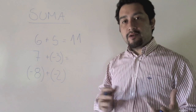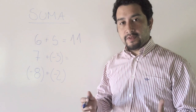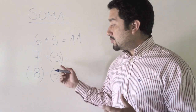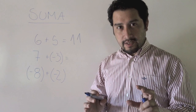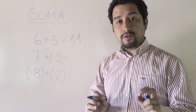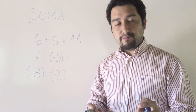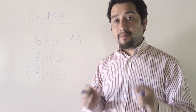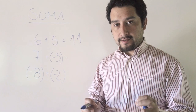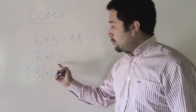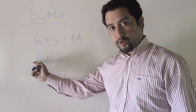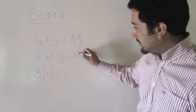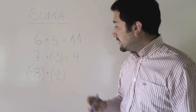En el segundo caso se presenta algo que no es muy común: sumar dos números con signos distintos. Para esto hay una regla que dice: cuando sumamos dos números con distintos signos, vamos a restar las cantidades y conservar el signo del mayor. ¿Cuál es el signo del mayor? Positivo. Entonces lo que hacemos es restar las cantidades: siete menos tres es cuatro con signo positivo.